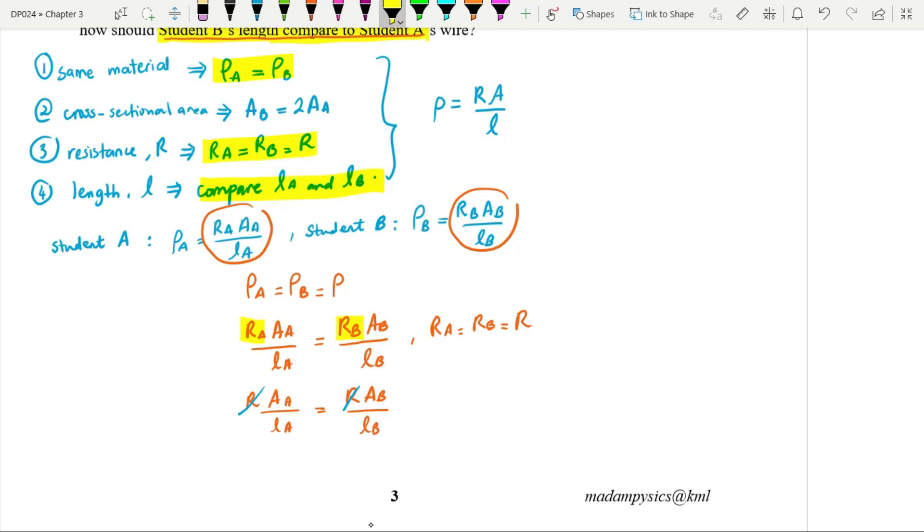And number two is we focus on area. AA, AA, AA and AB. So for area, it has its own relation. AB equals to twice AA. So I just copy. AB equals to twice AA.